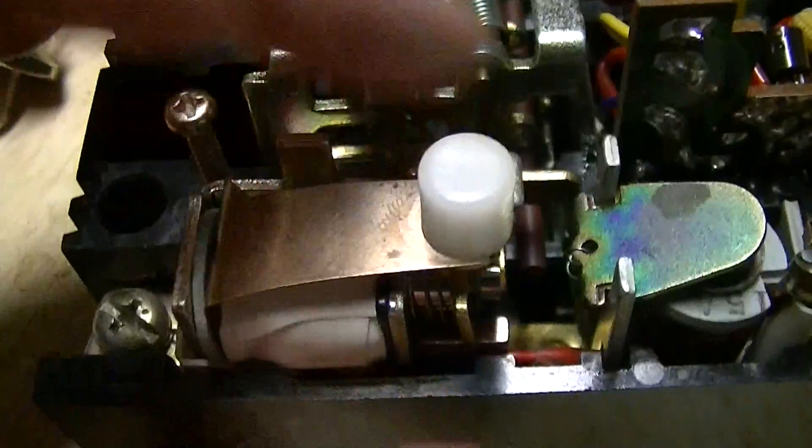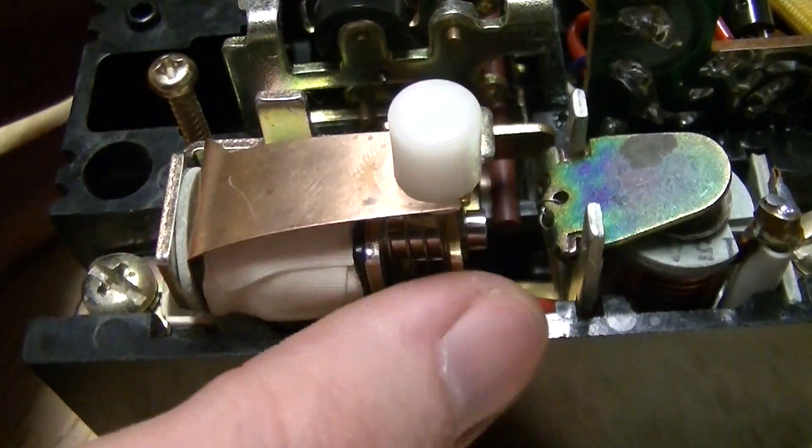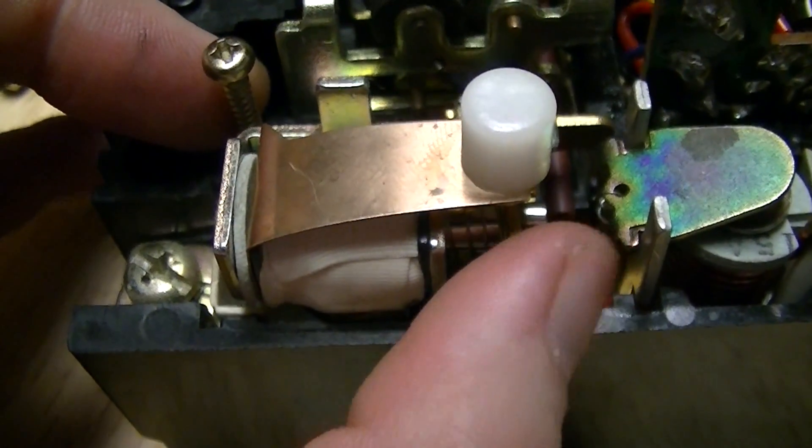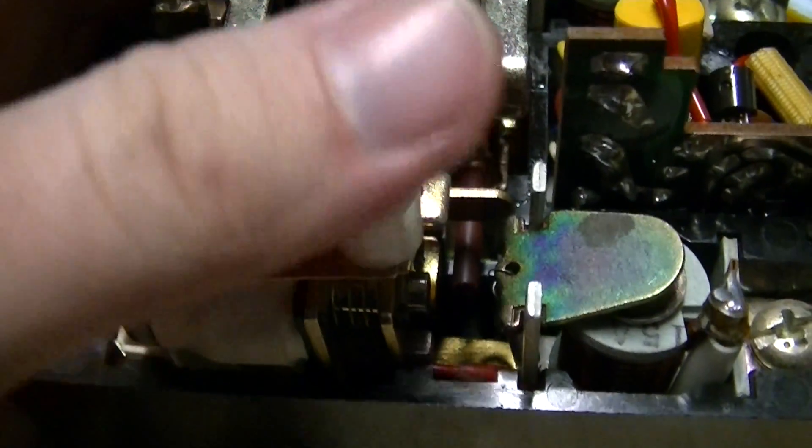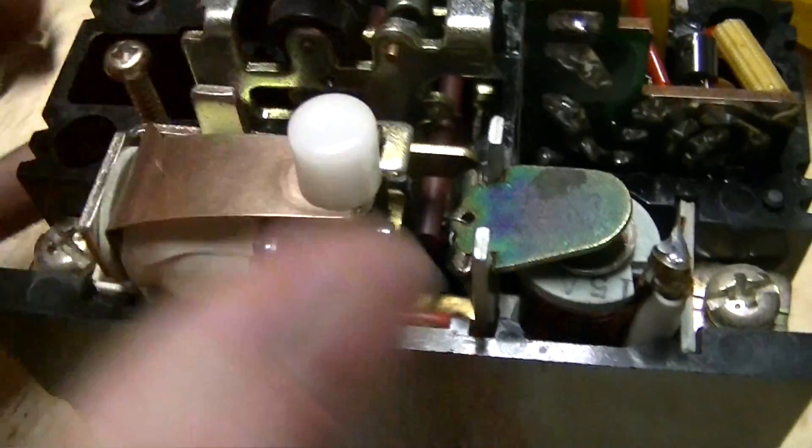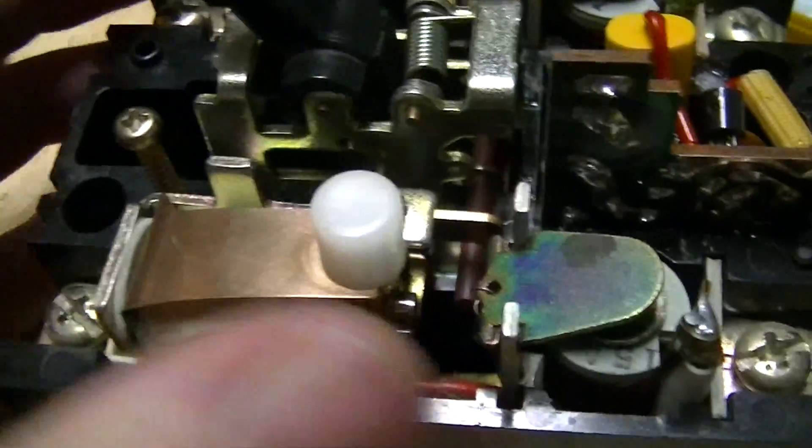There's that hole which is for the reset button. I forgot to mention, this solenoid is what actively trips the device in the event of a ground fault. The way it works is that this solenoid pulls in this catch. Now it's armed.